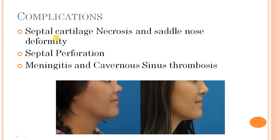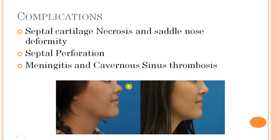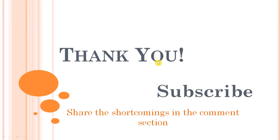For complications: since this is an infection, it may cause septal cartilage necrosis. The septal cartilage provides support to the dorsum of the nose, so once that support is lost, saddle nose deformity may occur — the dorsum settles down as you can see in this image comparing a normal nose to a saddle nose deformity. Septal perforation may also occur if the cartilage becomes necrotic, creating a hole in the septum. Meningitis and cavernous sinus thrombosis are also possible complications. That would be all for now — thank you, and subscribe for further upcoming videos.